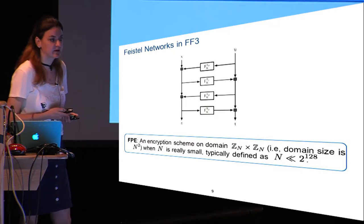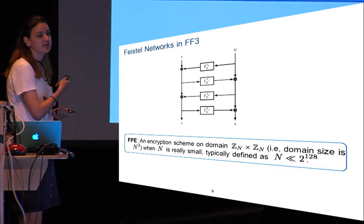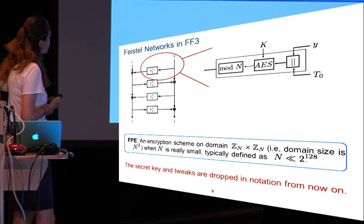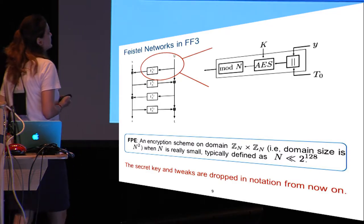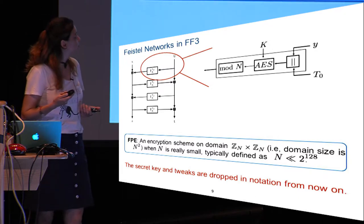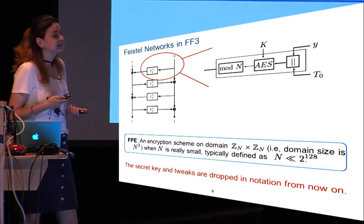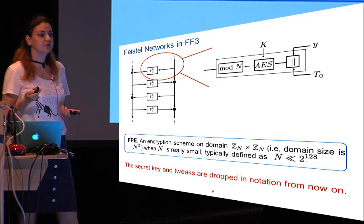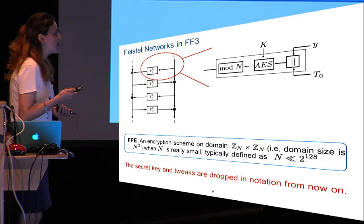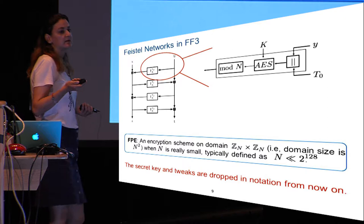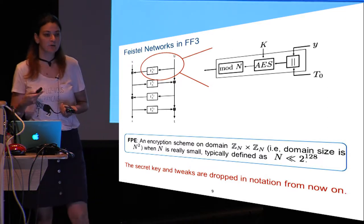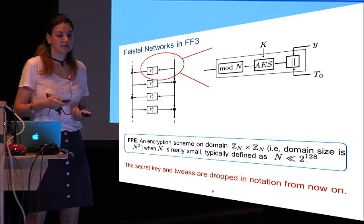Let's look at FF3 with Feistel networks. To simplify, we consider permutations on integer domains Z_n squared — the squaring comes from the two branches of the Feistel network. FF3 takes the right half of the input, pads it to 96 bits, concatenates it with 32 bits of the tweak, inputs it to AES, and truncates the output with a modular operation. This is basically how FF3 is designed.